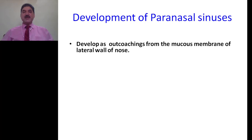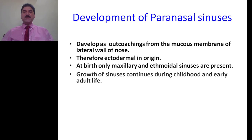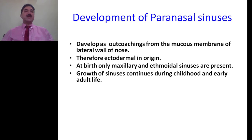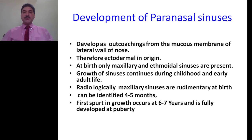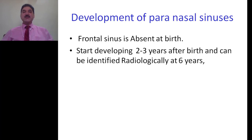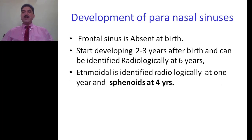Development of paranasal sinuses: paranasal sinuses develop as outpouchings from the mucous membrane of the lateral wall of the nose; therefore, they are ectodermal in origin. At birth, only maxillary and ethmoidal sinuses are present. Growth of sinuses continues during childhood and early adult life. Radiologically, maxillary sinuses are rudimentary at birth, can be identified at about 4 to 5 months of age. First rapid growth occurs at about 6 to 7 years and maxillary sinus is fully developed at puberty. Frontal sinus is absent at birth; it starts developing at 2 to 3 years after birth and can be identified radiologically at 6 years of age. Ethmoidal sinus is identified radiologically at 1 year and sphenoidal at 4 years of age.